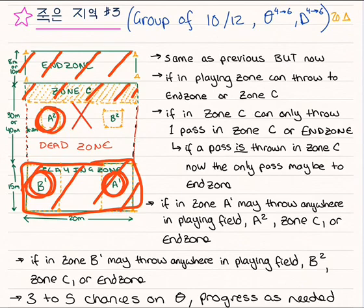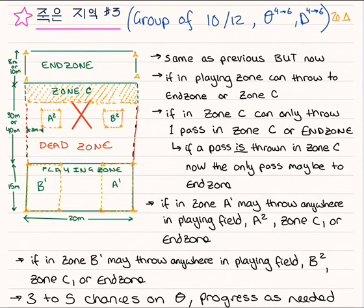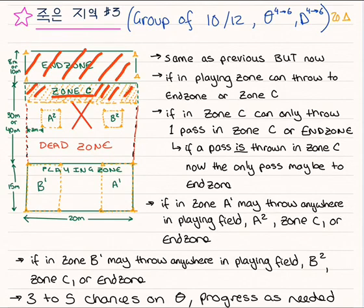However, only if I'm in area A can I also throw to area A2, and only if I'm in area B1 can I throw into area B2. If I catch it in zone C, my only two options for throwing are either back into zone C or into the end zone.